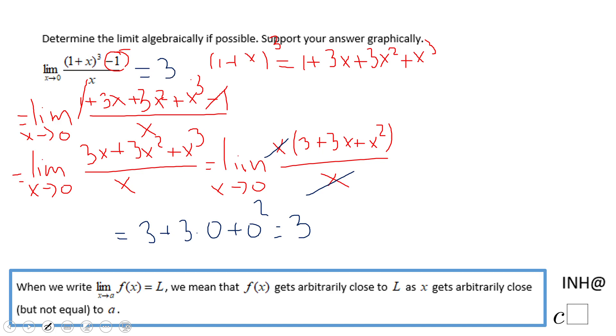Let's take a look now at the graphical approach. This is the graph of the rational function. You see it looks like a quadratic but it has a hole here, you need to be careful of that.